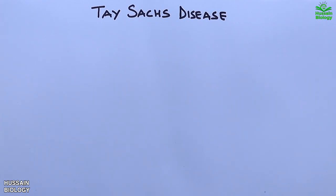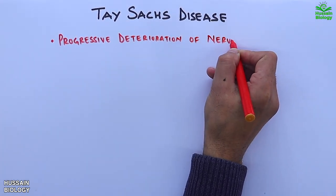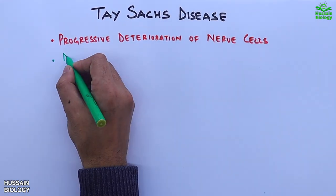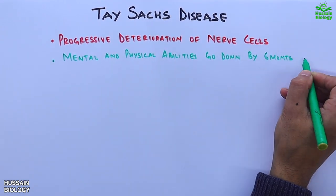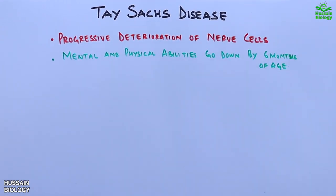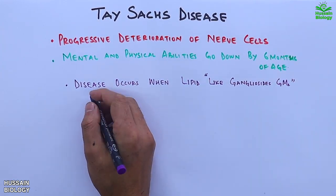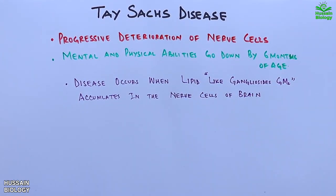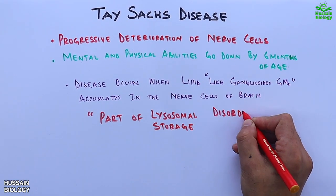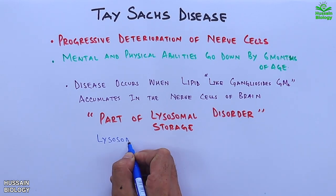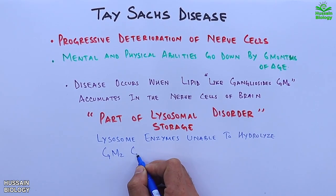In this disease there is progressive deterioration of nerve cells. The mental and physical abilities decline by six months of age. Tay-Sachs disease occurs when lipids like GM2 gangliosides accumulate in the nerve cells or brain. This is a lysosomal storage disorder where lysosomes are unable to hydrolyze GM2 gangliosides.